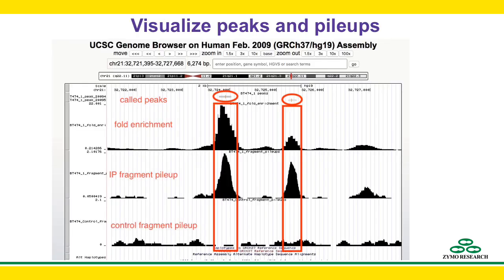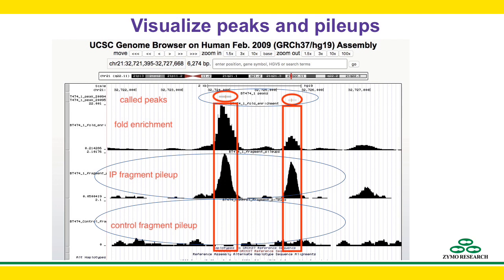After peak calling is performed, it is very helpful to visualize the peaks and the read pileups in the UCSC Genome Browser, which is only a few clicks away from our sample report. You can see in this screenshot that the pileups at these two particular locations are much higher in the IP sample than in the control sample — therefore, two peaks are called at these locations. We also calculated a fold enrichment plot, which shows enrichment levels compared to the control sample. While in the UCSC Genome Browser, you can compare your results to loads of other useful information in their database, for example, ENCODE ChIP-seq results.